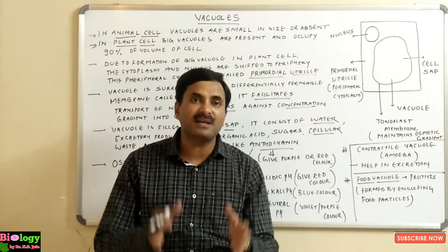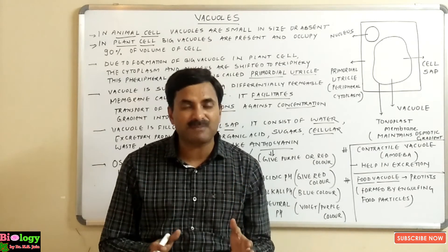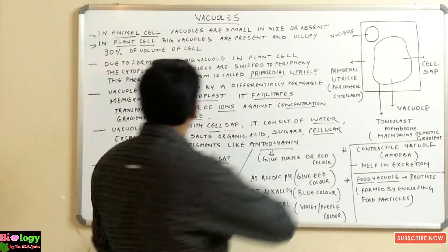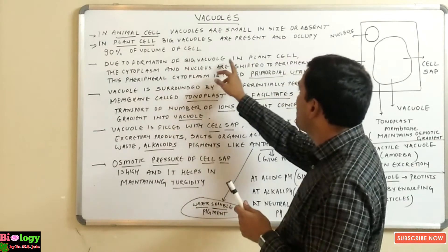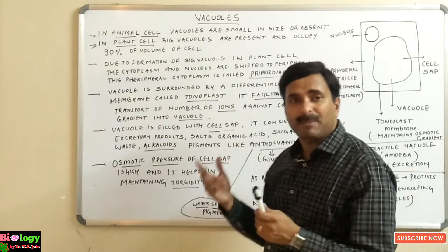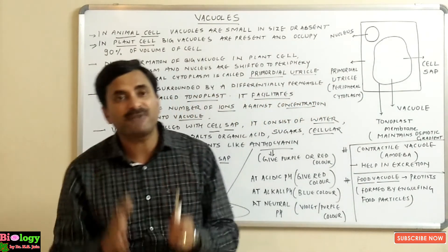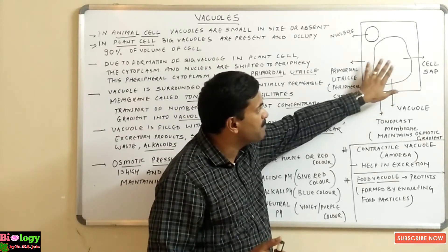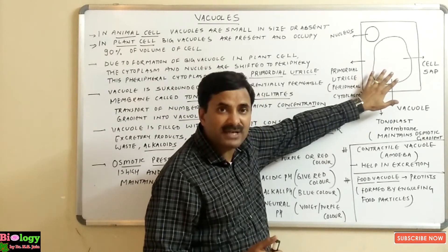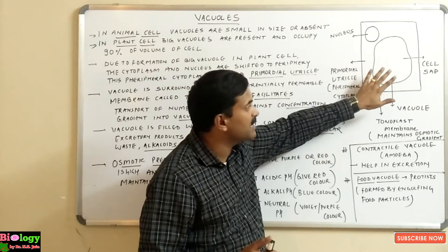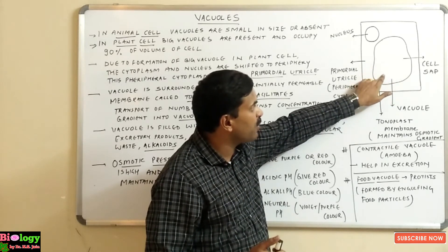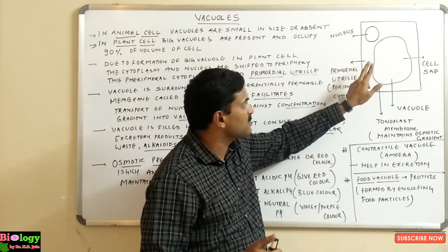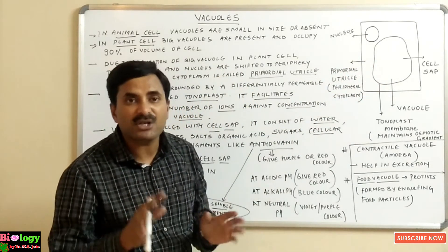In the case of the animal cell, a small vacuole is present or the vacuoles are absent, and in the plant cell a big vacuole is present. Due to the formation of the big vacuole in the plant cell, the cytoplasm and nucleus are shifted to the periphery. You can see in the diagram that the vacuole is occupying 90% area of the cell, so the nucleus and the cytoplasm are shifted towards the periphery.